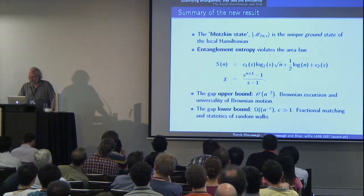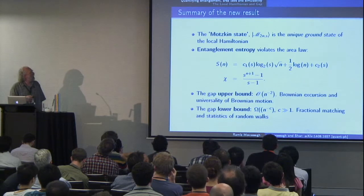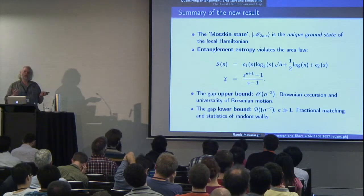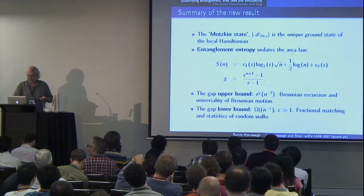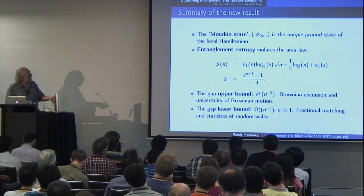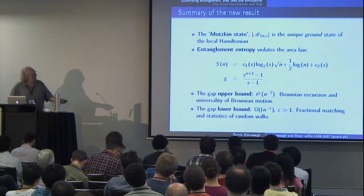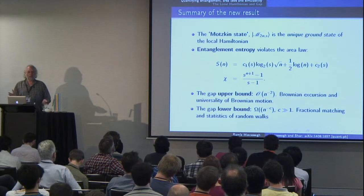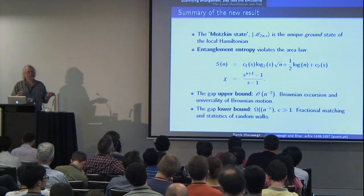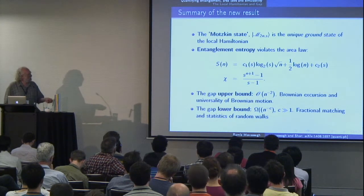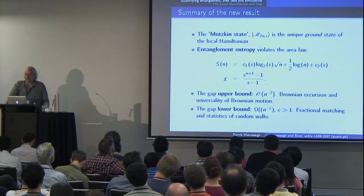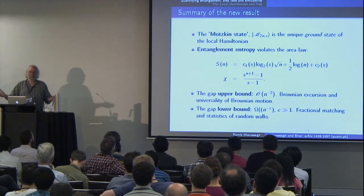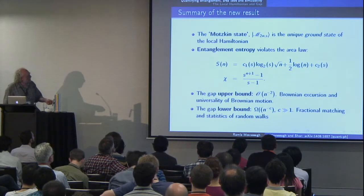So how do these things work? I'll first explain what the unique ground state of the local Hamiltonian is, and then explain why the Hamiltonian gives that as a unique ground state. We can compute lower-order terms of the entanglement entropy, and the Schmidt rank is just a geometric series. The gap upper bound is O(n^{-2}), and this corresponds to a previous result. Conformal field theories had a 1/n gap, so this shows the continuous limit is probably not a conformal field theory — which raises the question of what the continuous limit of this spin chain actually is.